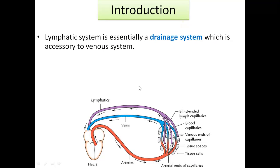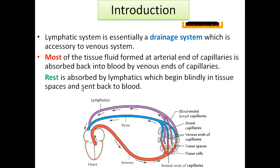Most of the tissue fluid formed at the arterial end of capillaries is absorbed back into blood by the venous end of capillaries. The rest, which is not absorbed by the venous end — which begins blindly in tissue spaces — is collected by lymphatic capillaries and returned to the venous system, thereby to the right atrium of the heart.